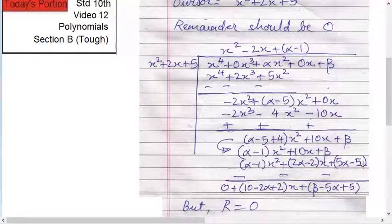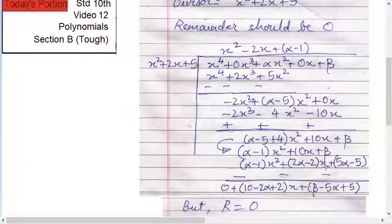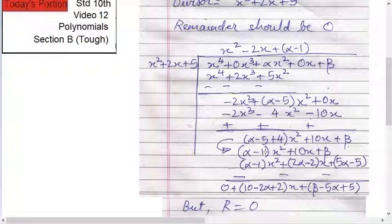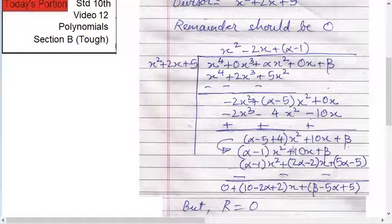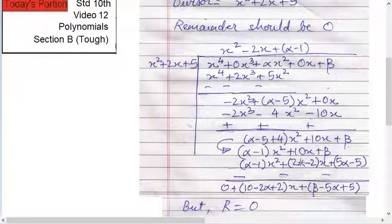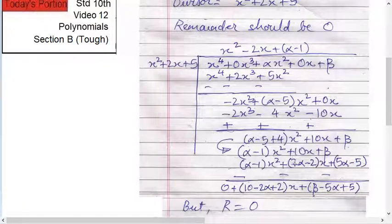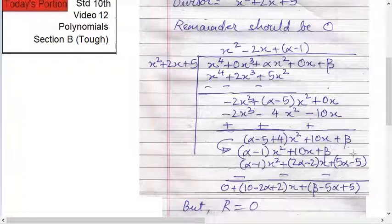Signs plus outside, now change the signs: minus, minus, minus. This gets cancelled. First term, what remains is 10 minus 2 alpha plus 2. This minus will be for all now, minus 2 alpha plus 2 into x, and here beta minus 5 alpha plus 5.